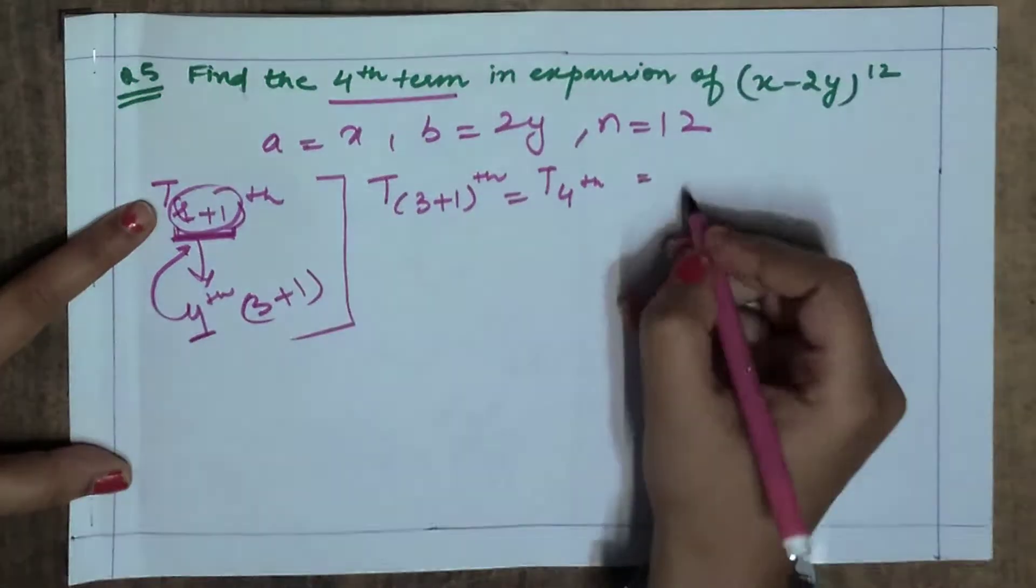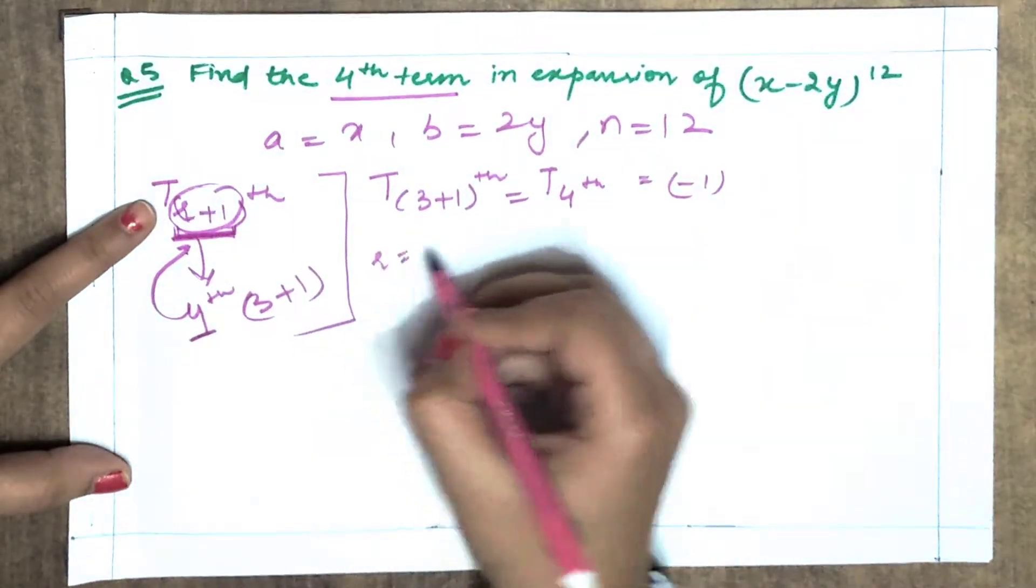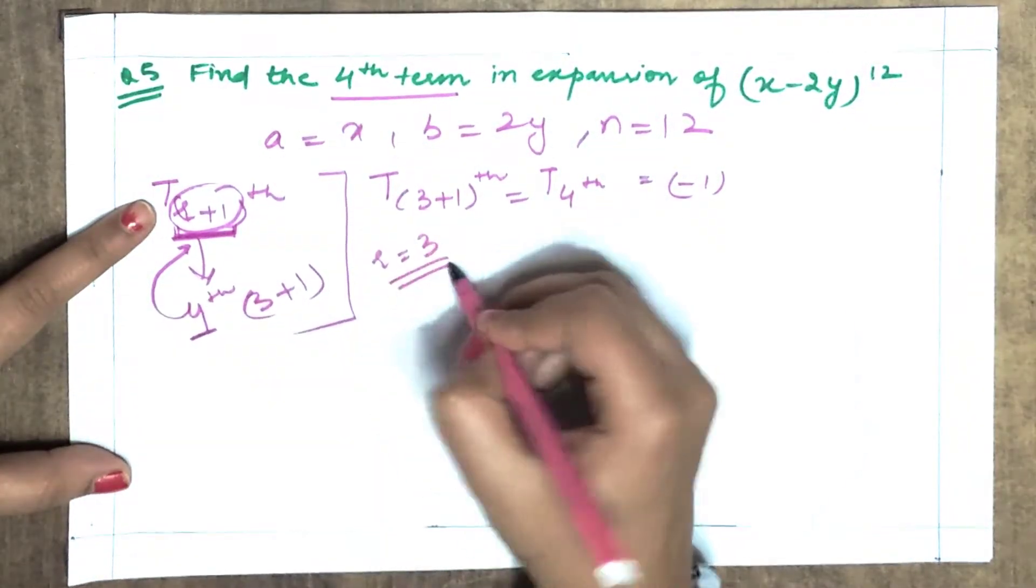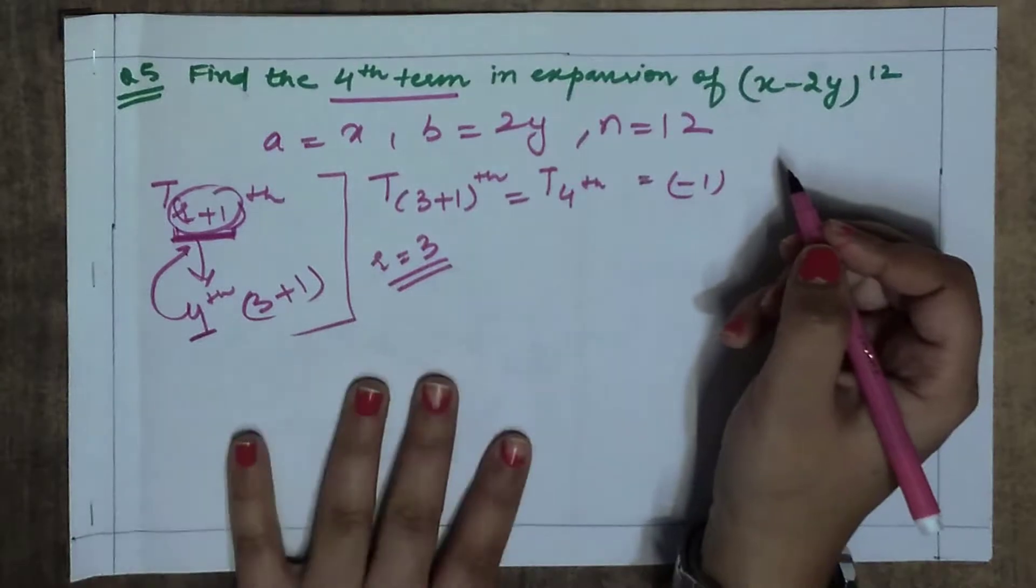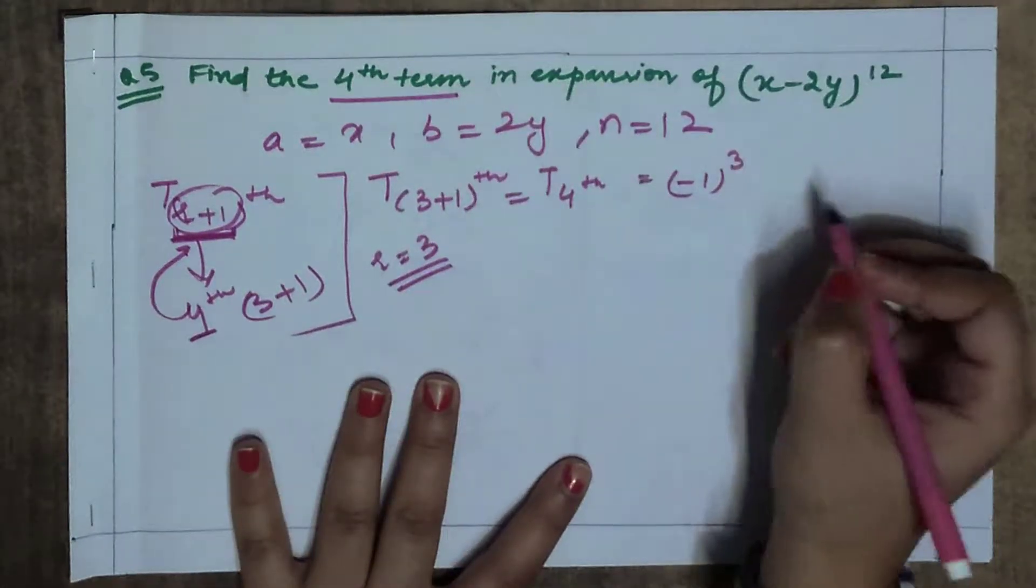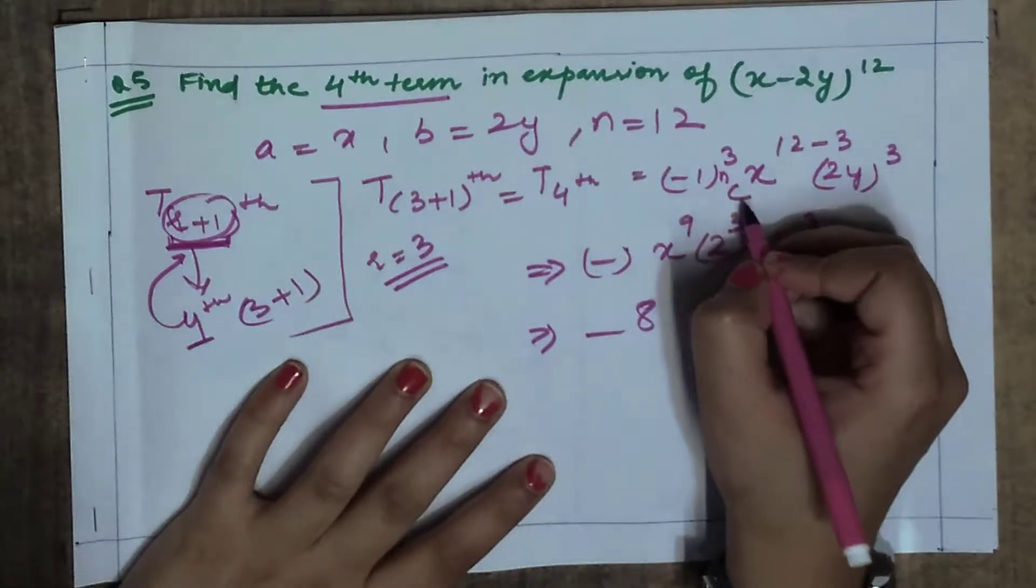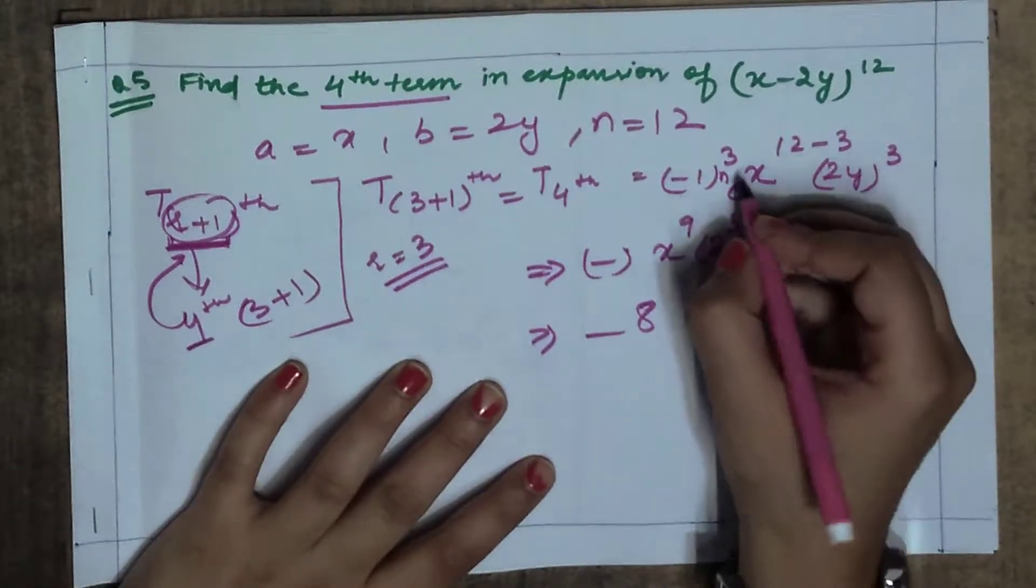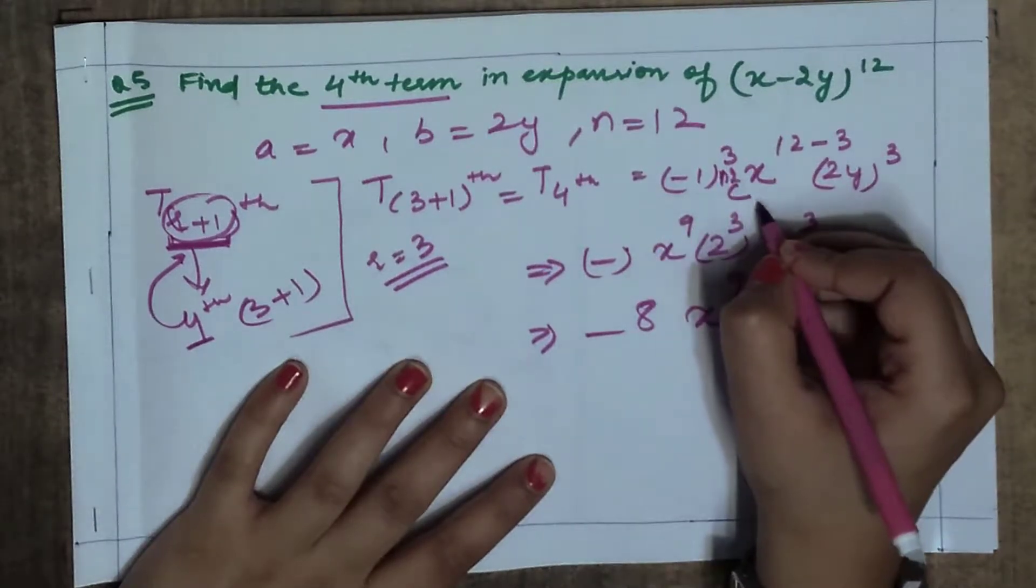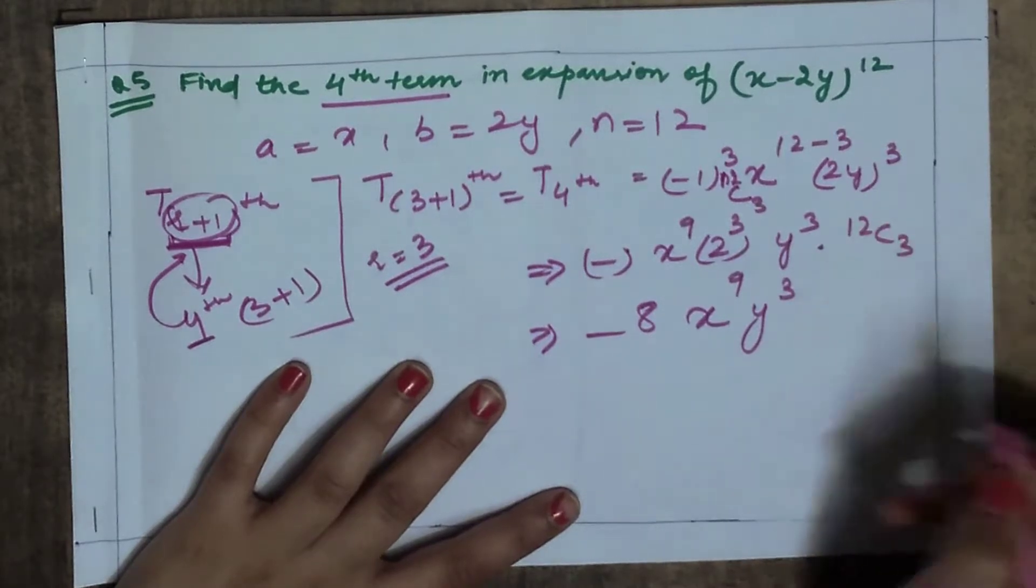Here it is minus 1 to the power r. What is your r value? 3. I will not need to remove because I have written the r. So I will write directly: we have nCr. So n value is 12, C, r value is 3. 12C3.